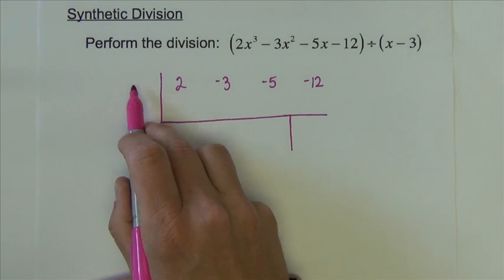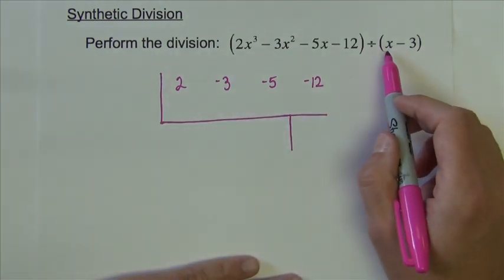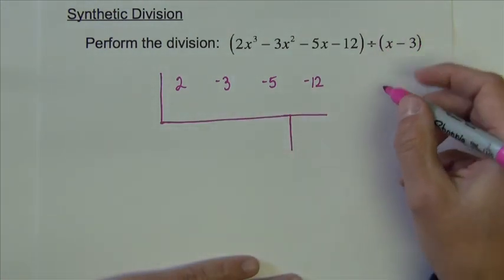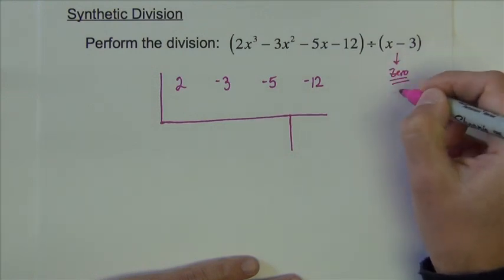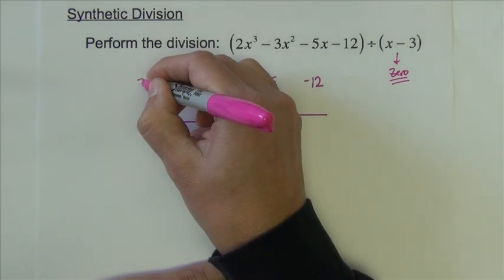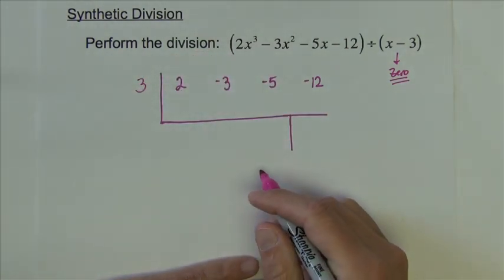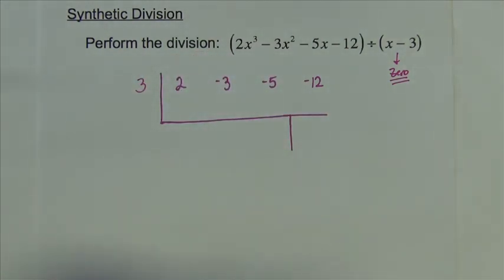On the outside of this, we don't use the divisor. We use the zero of the divisor. We need the zero, and the zero is 3, positive 3.